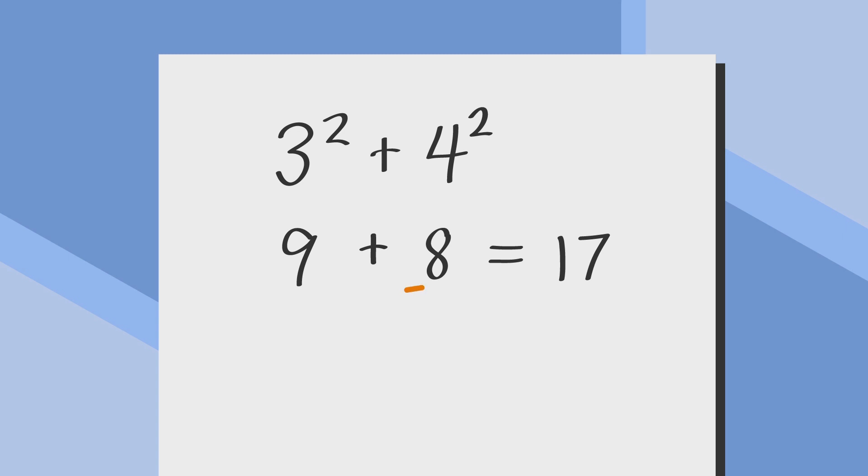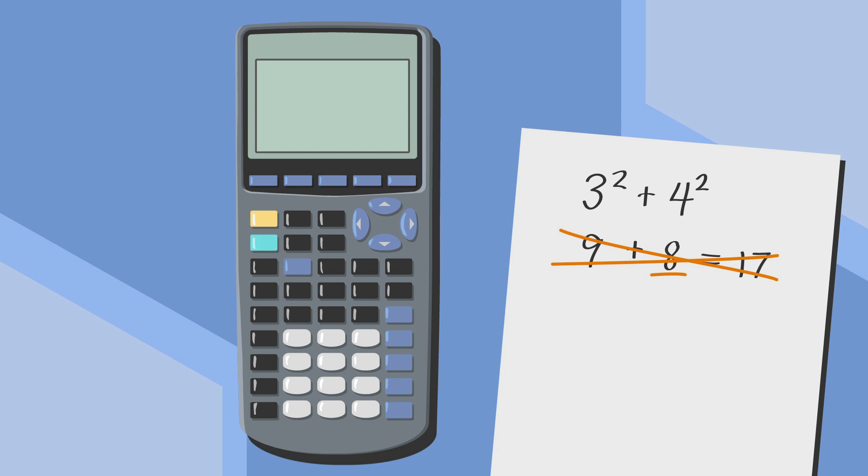but wait, see right there? Saying that 4 squared is equal to 8 is exactly the sort of mistake you can avoid by outsourcing your brain power to a calculator.